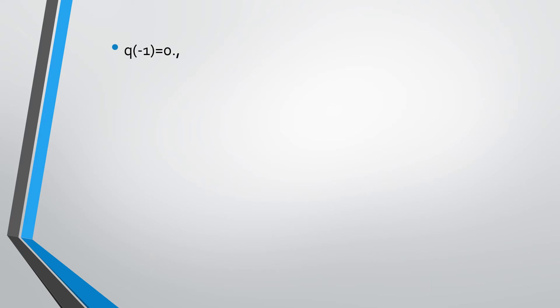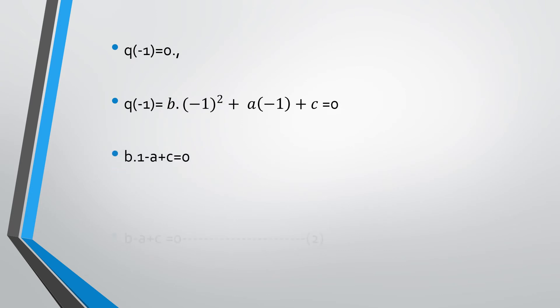Next, repeat the process for q of minus 1 is equal to 0. Both polynomials p of x and q of x have the same common factor, so substitute the same value minus 1 in place of x. Substituting minus 1 into q of x gives equation 2: b minus a plus c is equal to 0.